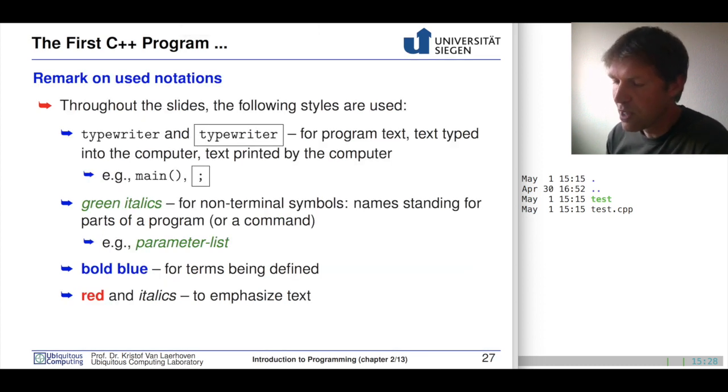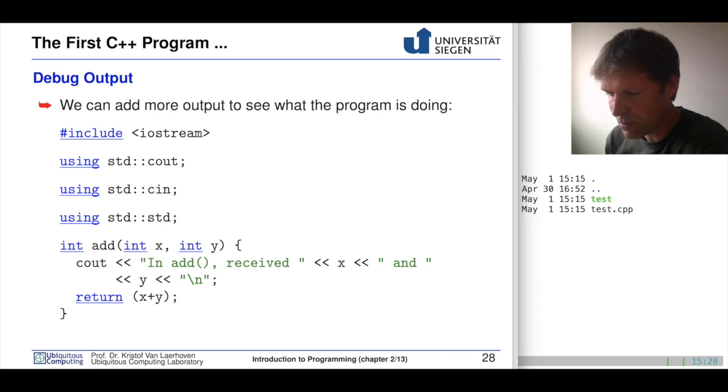Now we will use in all of these slides lots of particular notations and those have a certain meaning. So I will use a notation typewriter with a box around it for program texts. And this is usually text that you can also type into your terminal by just trying things out. Green italics are usually things that are standing for parts of a program or a command. Bold blue is for terms that are being defined that we know are certain keywords. Red and italics is to emphasize our texts. Just to make sure that for the next chapters, the next 12 chapters, you know what these particular layouts mean.